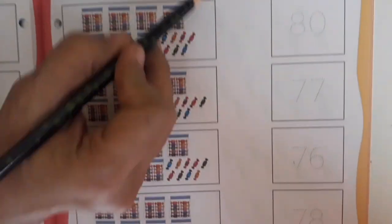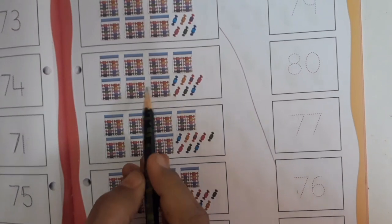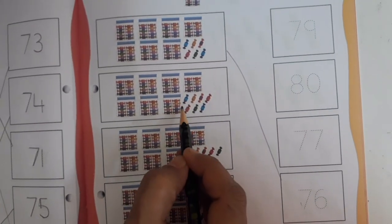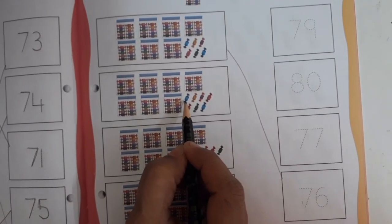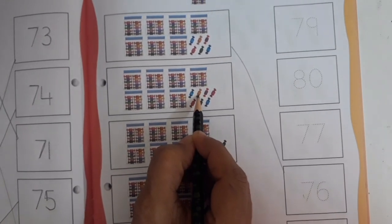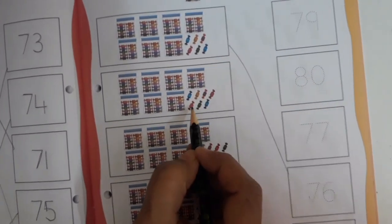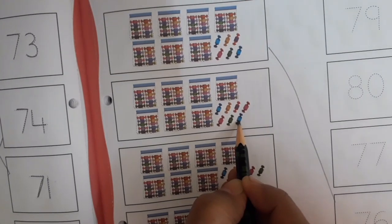The same way: 70 chocolates and 71, 72, 73, 74, 75, 76, and 77.